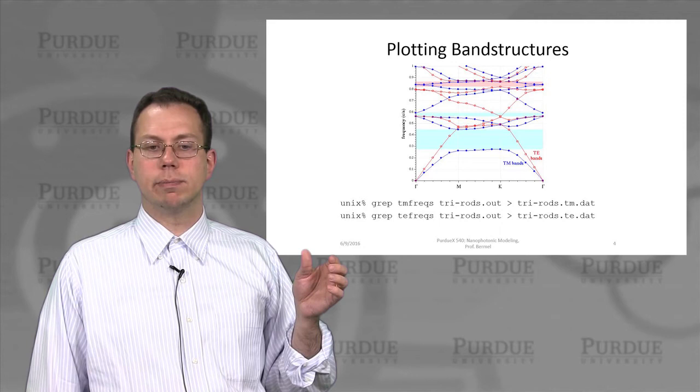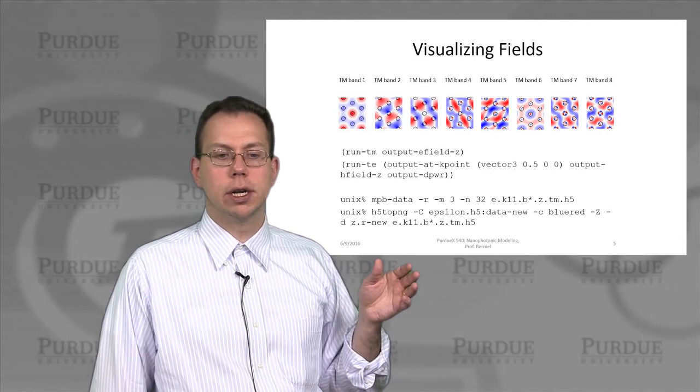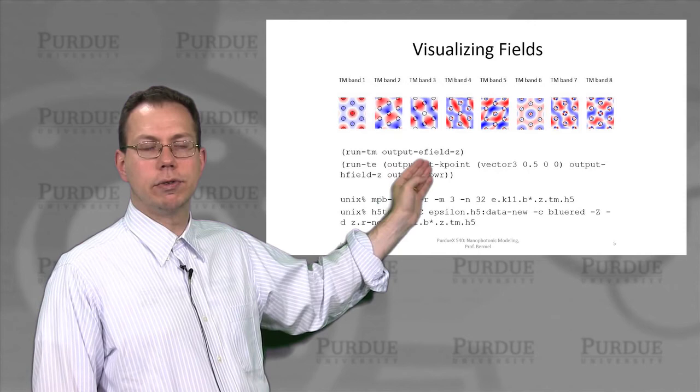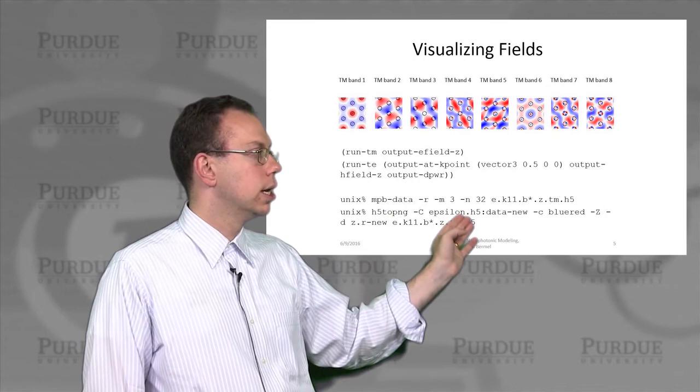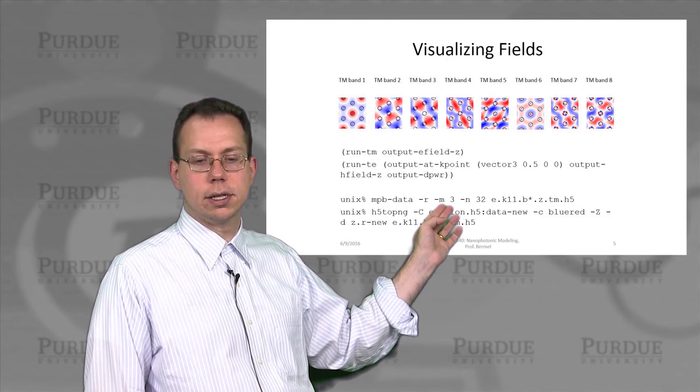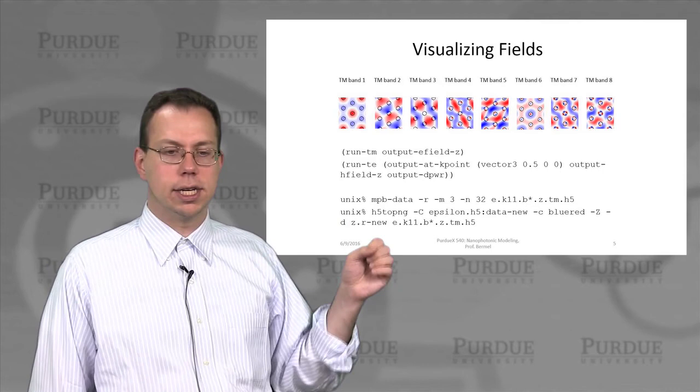And then if we visualize the fields that are being output using these so-called band functions, which are invoked along with the TE or TM run commands in the bottom of the file, then we actually can see what the different field profiles look like at different K points. And we can actually visualize that using MPB data, again, to correct the basis. And then running h5 to ping to generate all these outputs. And you can actually overlay the epsilon on top of the field profiles. So you can see where exactly are the fields compared to the epsilon output.